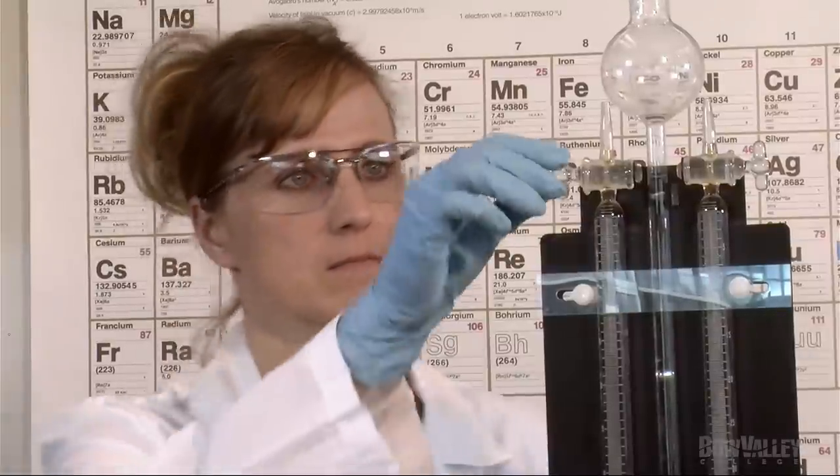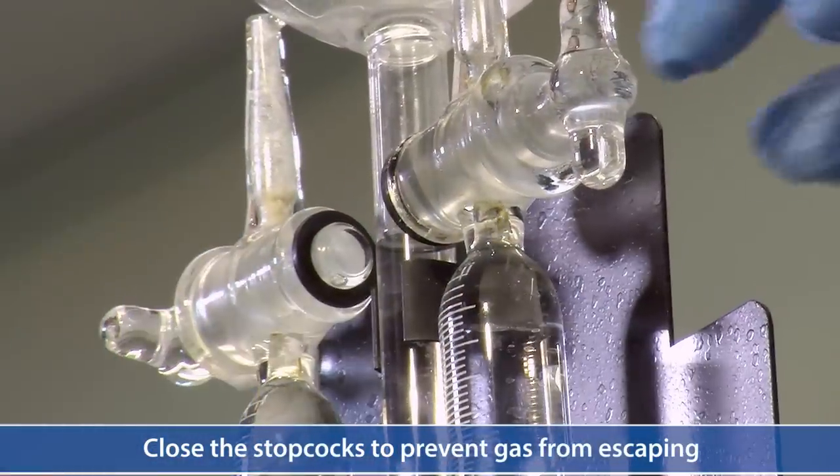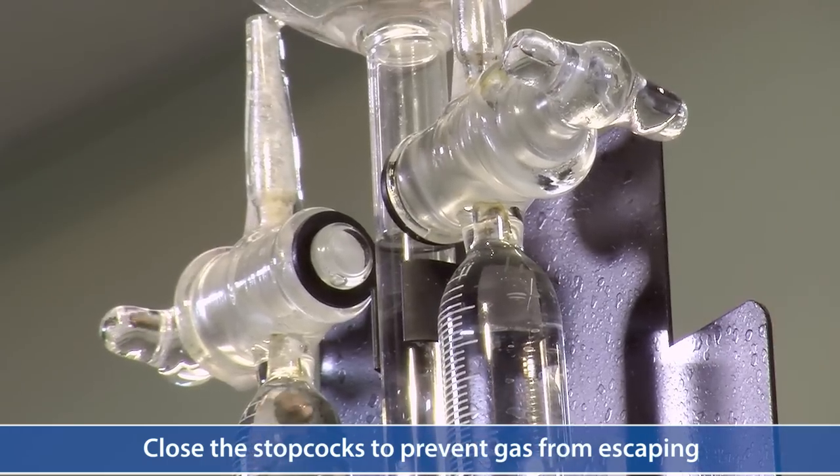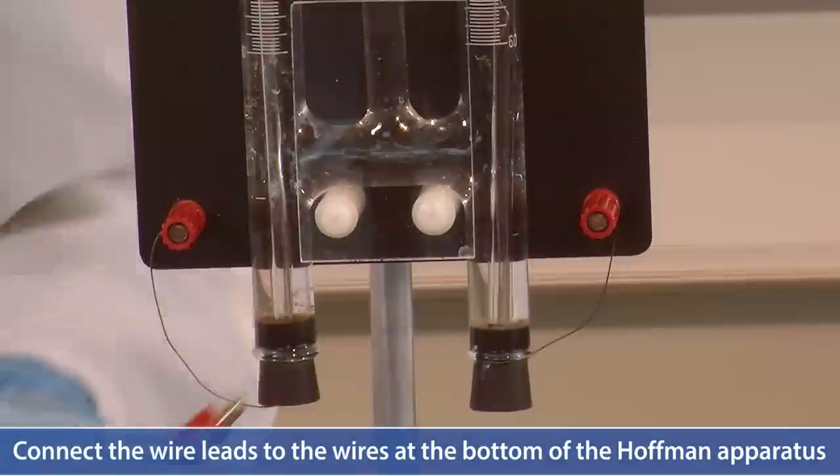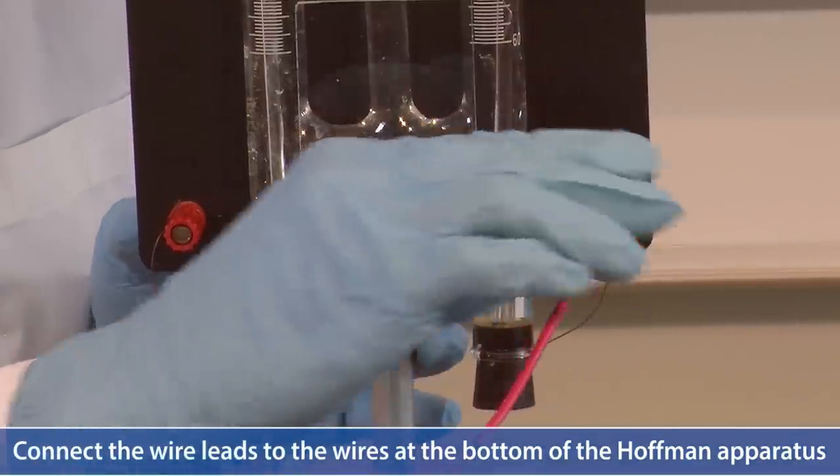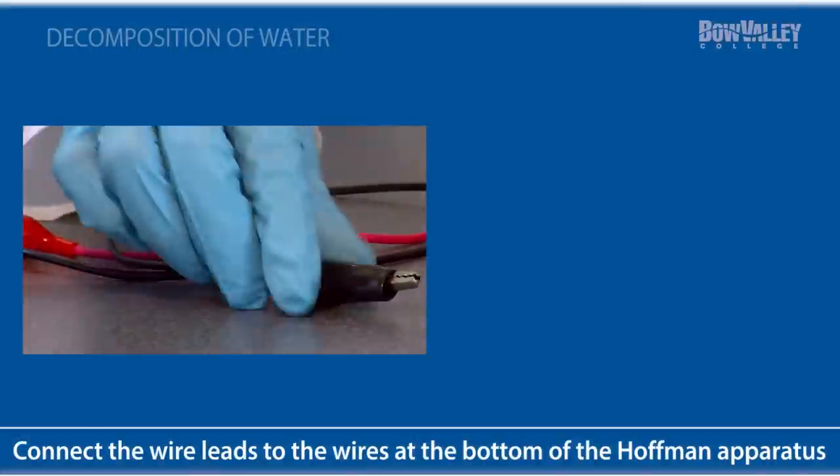Once you've filled up the apparatus with water, you now need to close the stop cocks. Connect the wire leads to the wires at the bottom of the Hoffman apparatus. Red wire to one side, black wire to the other side.